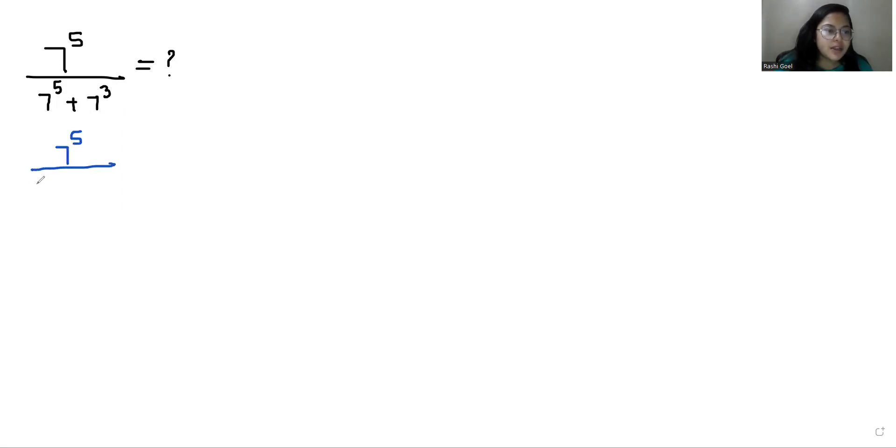So 7 power 5 by 7 power 5 we can write it as 3 plus 2 plus 7 power 3. Now according to the exponent rule, x power m plus n we can write as x power m times x power n.